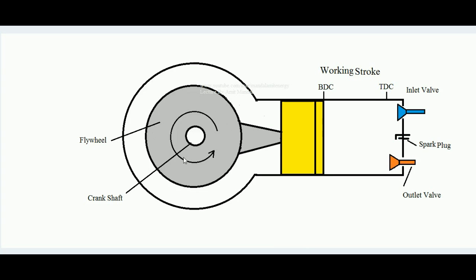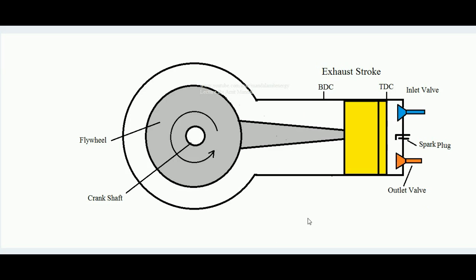The work done is transferred to the flywheel. The flywheel is actually acting as a mechanical energy reservoir — whatever work is supplied by the piston to the flywheel is absorbed in the form of rotational kinetic energy. After the end of the working stroke, the outlet valve opens and the burnt charge is expelled out of the cylinder. So these are the four strokes of a four-stroke SI engine: suction, compression, working, and exhaust.